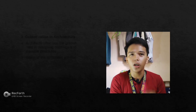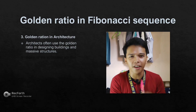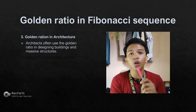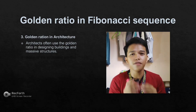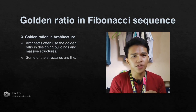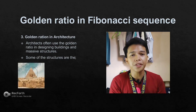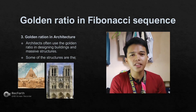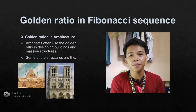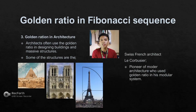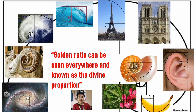The last part is the golden ratio in architecture. Architects often use the golden ratio in designing buildings and massive infrastructures. Examples include the Great Pyramid of Egypt, the United Nations building, and the Eiffel Tower in Paris. Swiss-French architect Le Corbusier, a pioneer of modern architecture, used the golden ratio in his modular system. From seashells, flowers, bananas, human ears, buildings, waves, typhoons, and galaxies, the golden ratio can be seen everywhere as the divine proportion.